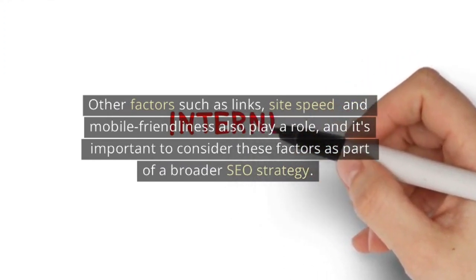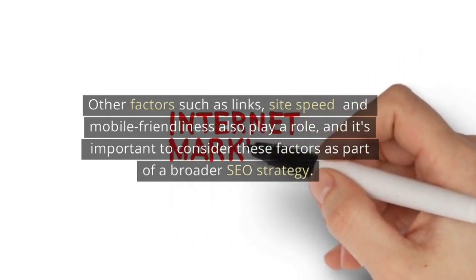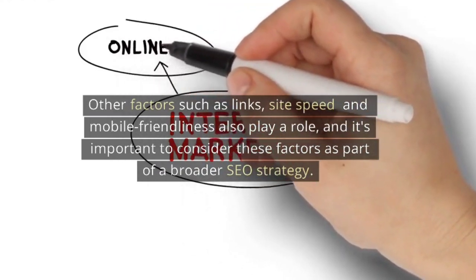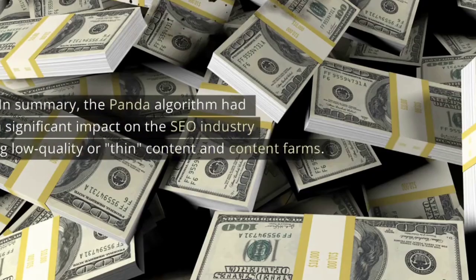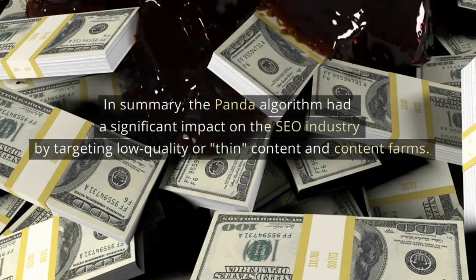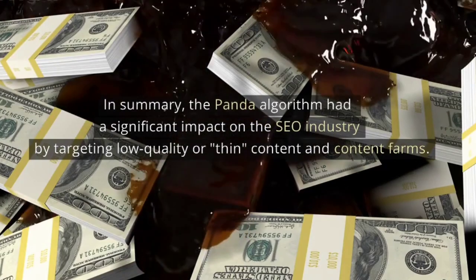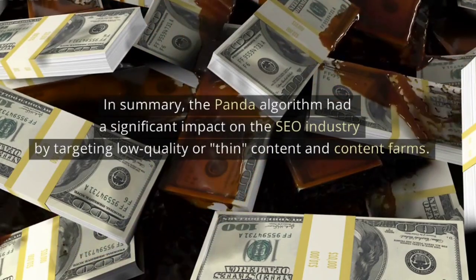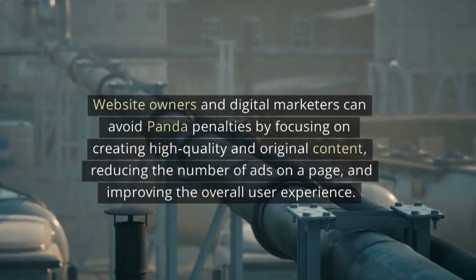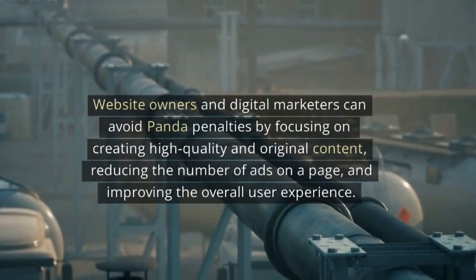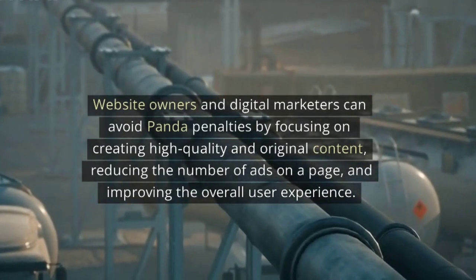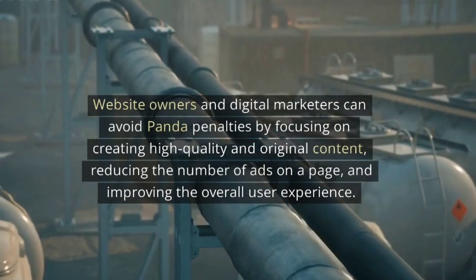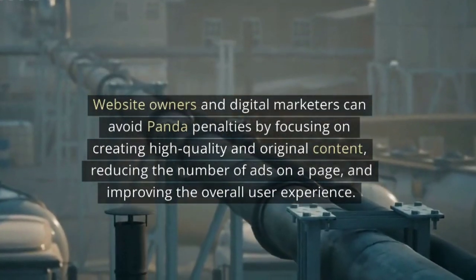Other factors such as links, site speed, and mobile-friendliness also play a role, and it's important to consider these factors as part of a broader SEO strategy. In summary, the Panda algorithm had a significant impact on the SEO industry by targeting low-quality or thin content and content farms. Website owners and digital marketers can avoid Panda penalties by focusing on creating high-quality and original content, reducing the number of ads on a page, and improving the overall user experience.